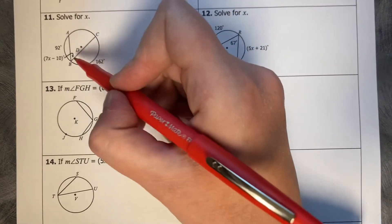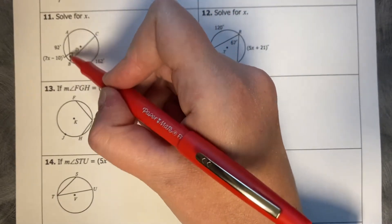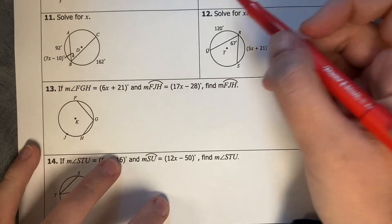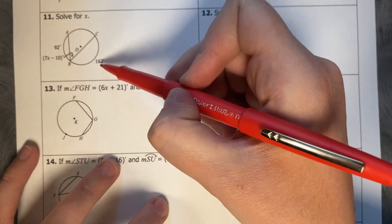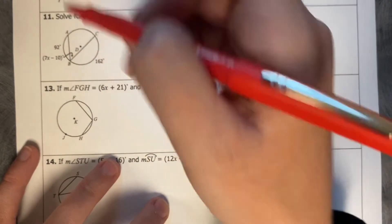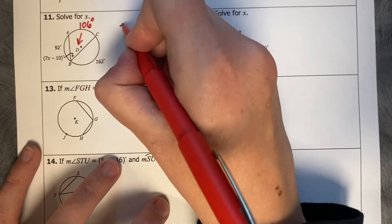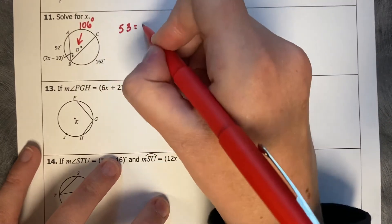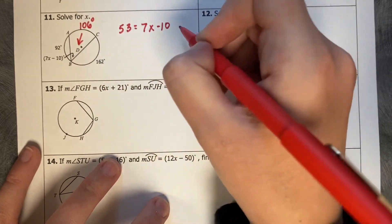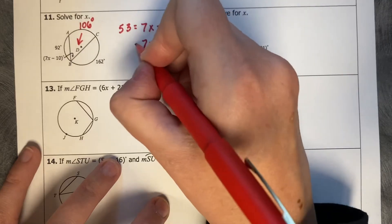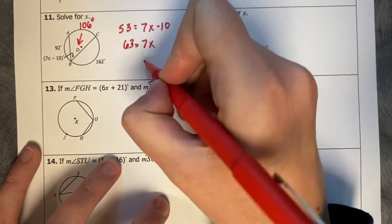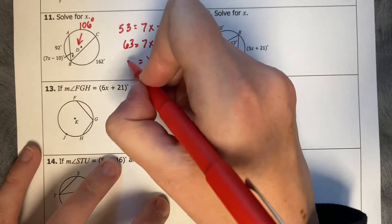Solve for X. So we'd like to know its corresponding arc measure, but I don't know it yet. Again, 92 plus 162 minus 360 is 106 degrees. When I go in, we divide it by half, so that's going to be 53 equals 7X minus 10, add 10, 7X equals 63, divide by 7, and X equals 9.